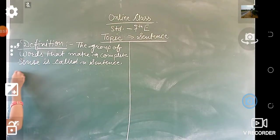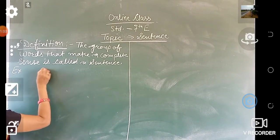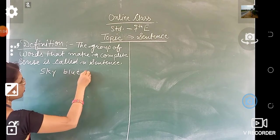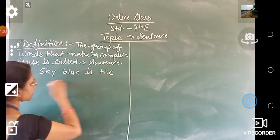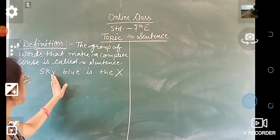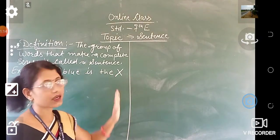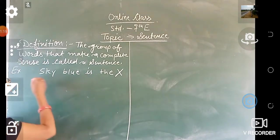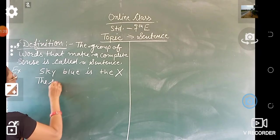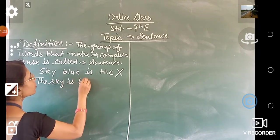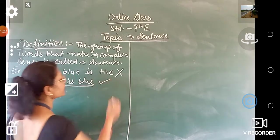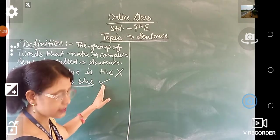For example, 'sky blue is the' — it is not a sentence because it does not give a complete sense. If I write it this way: 'The sky is blue,' it gives a complete sense. So it is a sentence.